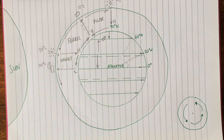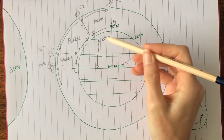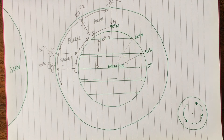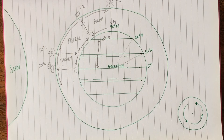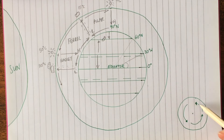Now, the Earth spins, and this is known as the Coriolis force. Our air is not going to travel in straight lines — it's going to be deflected. The best way to explain this is to imagine a roundabout going anti-clockwise.